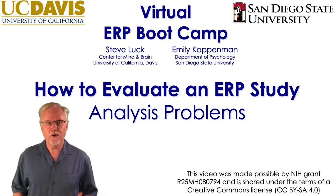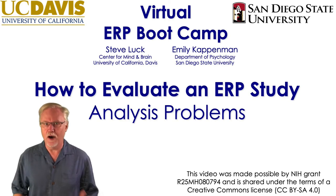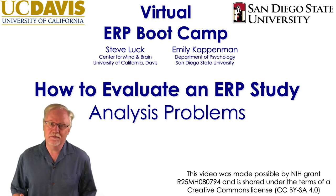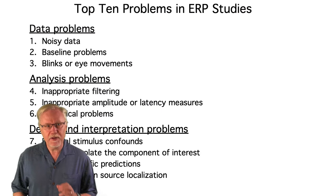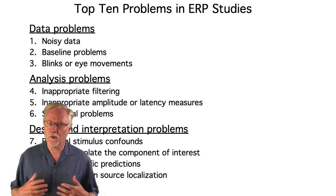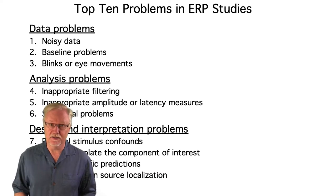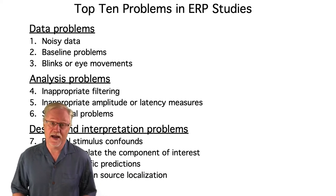In this video, I'm going to go through the most common problems I find in how people analyze their ERP data. There are a million ways to analyze ERP data and a million ways to make mistakes, but I'm going to focus on inappropriate filtering, problems with quantifying the amplitudes and latencies of the ERP components, and statistical problems. These are the most common analysis problems that I see.